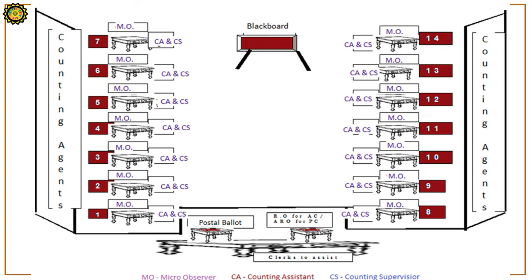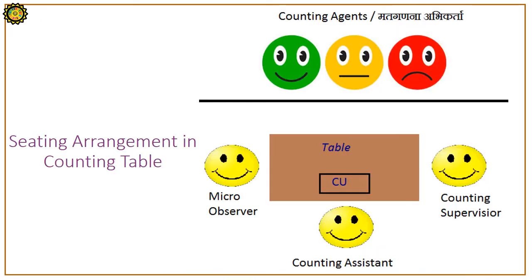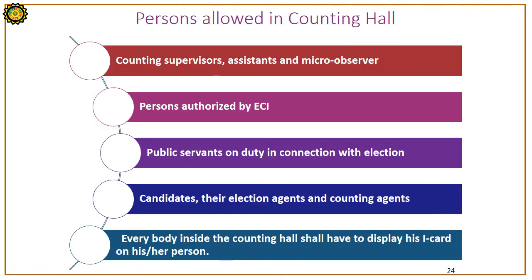The ideal counting centre has 14 tables – 7 on one side and 7 on the opposite side. Across each table, there will be seating for a micro-observer, counting supervisor, and counting assistant. Seating for the Returning Officer, ARO, and observer will also be there, along with a table for tabulation work. The first counting table will be earmarked as the VVPAT Counting Booth (VCB). On each counting table, the control unit will be placed, with micro-observer, counting assistant, and counting supervisor on one side and counting agents on the other.